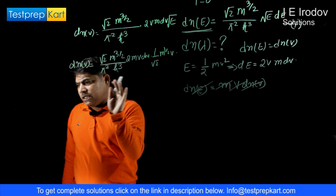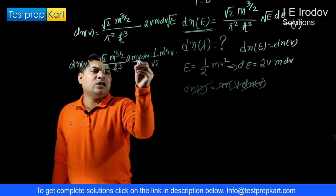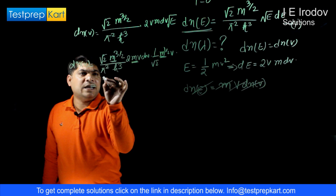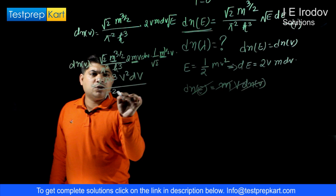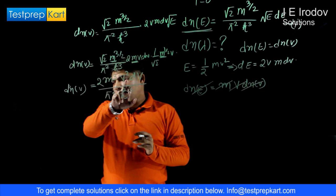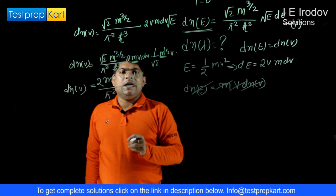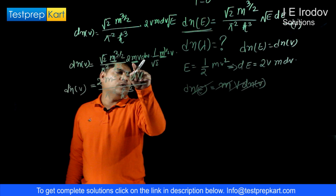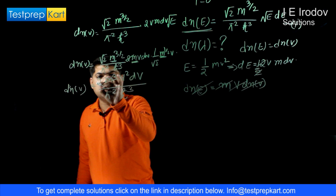Collecting all terms: the 1/root 2 factors cancel, m to the power 3/2 combines with the remaining m factors, h-cubed remains in the denominator, and V squared times dV appears in the numerator. The final expression is: dN(V) equals 2m cubed times V squared times dV over pi squared times h-cubed. This is equation number 1.